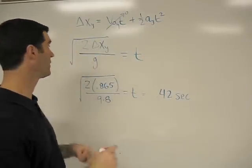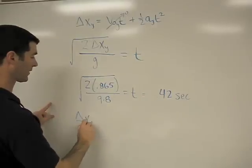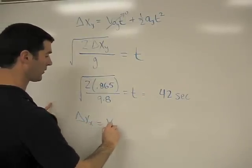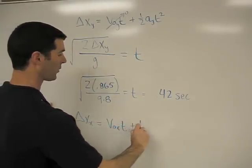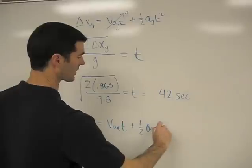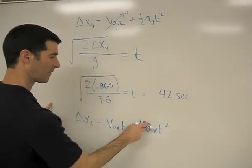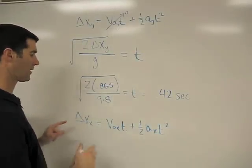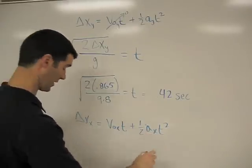Now we do this one more time. Delta x in the x-direction equals v-naught x times t plus one-half a sub x times t squared. And we notice that there's no acceleration in the horizontal direction.